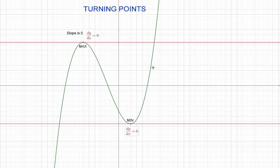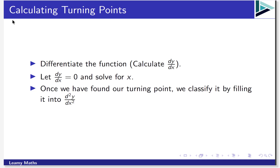Our maximum and minimum turning points are the two points on this cubic function where the slope equals zero. So if we want to find turning points — max or min — we're interested in where the slope of the tangent is zero, in other words where the derivative is zero. Our method: first, differentiate the function and calculate dy/dx.